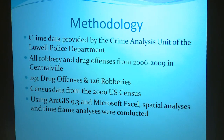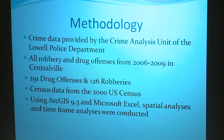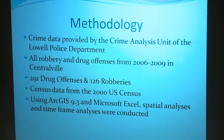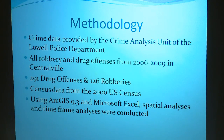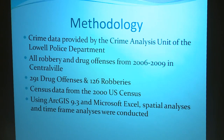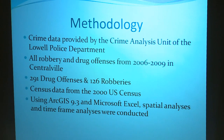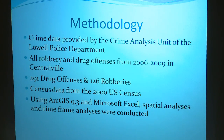I collected two forms of data. The first being crime data, which I obtained from the Lowell Police Department's Crime Analysis Unit. This consisted of all the drug and robbery offenses from 2006 to 2009 in the one neighborhood of Lowell I'm studying — 291 drug offenses and 126 robberies. The drug offenses include all drug-related offenses: drug trafficking, possession, paraphernalia, anything related to drugs. The second form of data was census data collected from the 2000 U.S. Census, which I use to relate crime to the characteristics of the community. I'll show a series of maps overlaying the crime data and the census data.